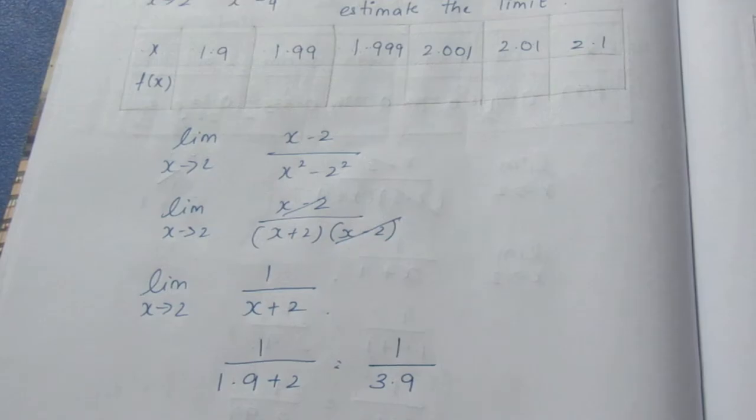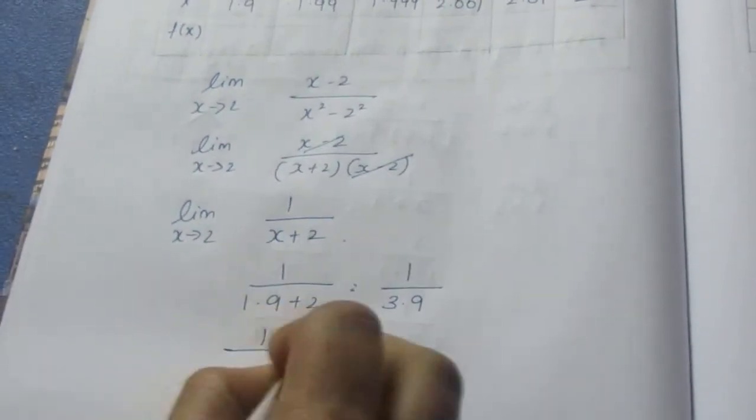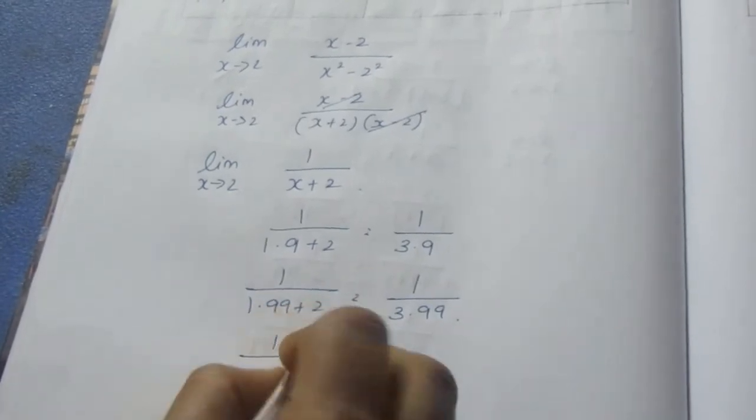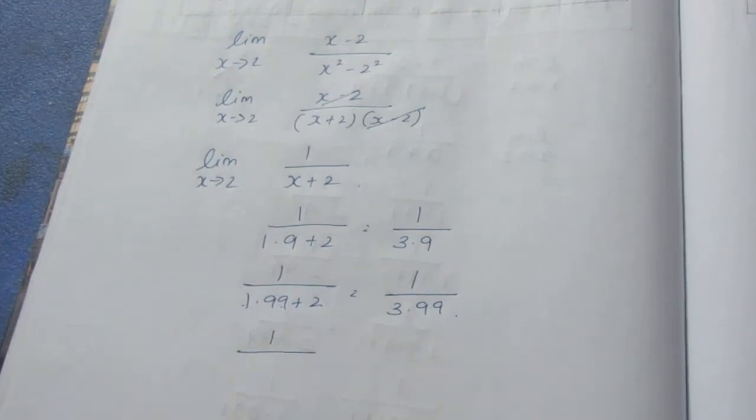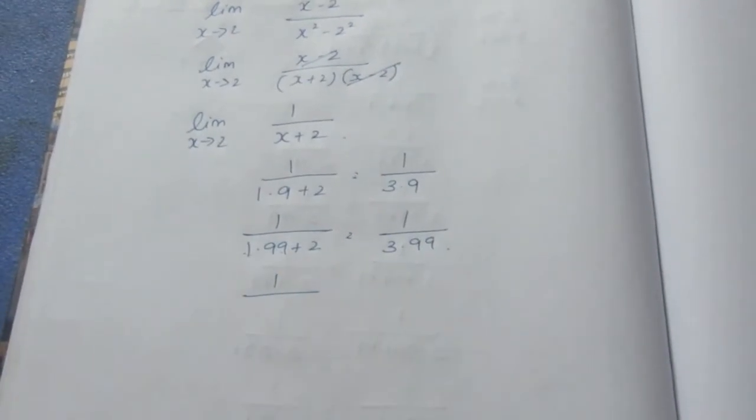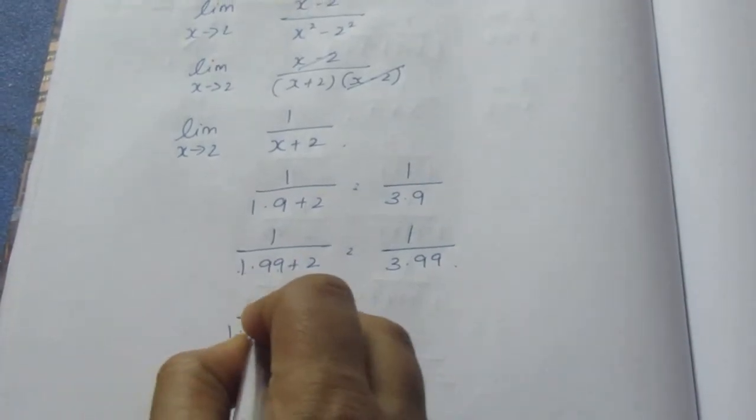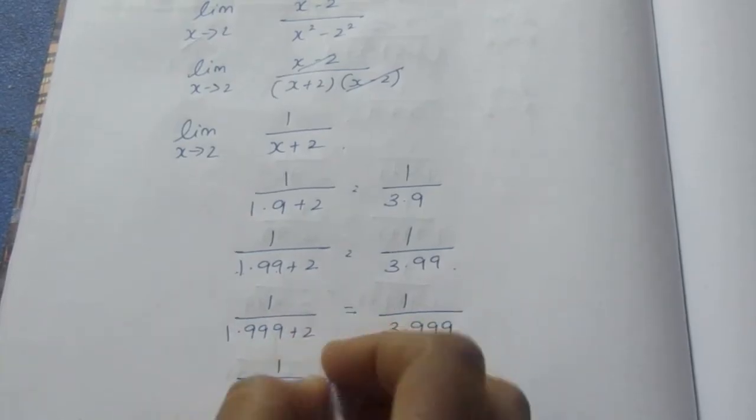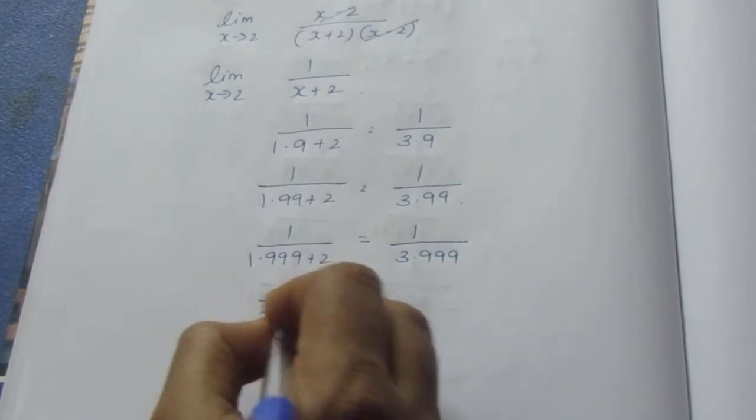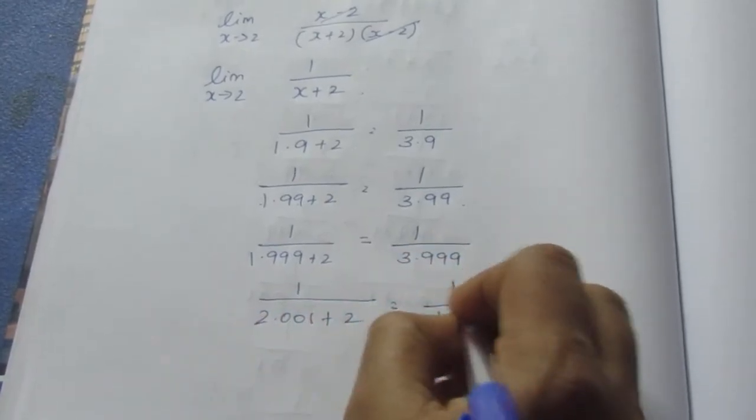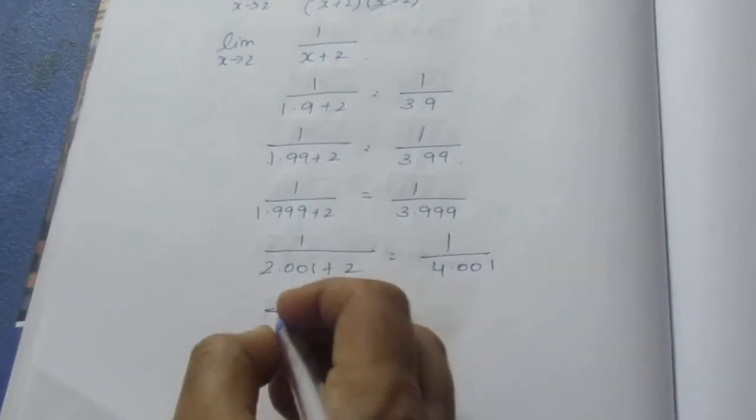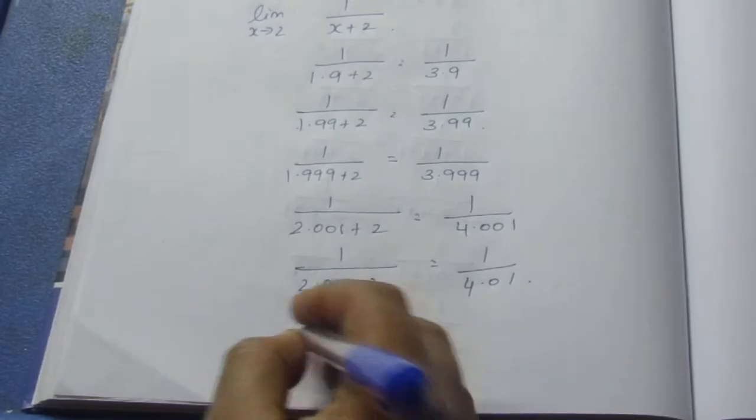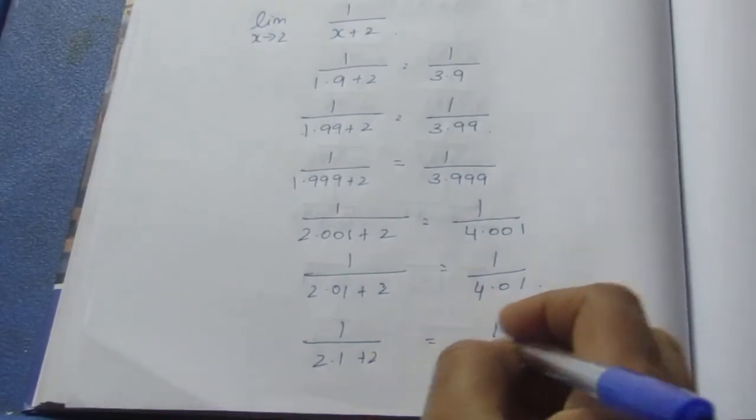If you want to use the calculator, you can use the calculator and divide it. Now, 1 by 1.99 plus 2, 1 by 3.99. 1 by 2.001 plus 2 equals 1 by 4.001. 1 by 2.01 plus 2 equals 1 by 4.01. 1 by 2.1 plus 2 equals 1 by 4.1.